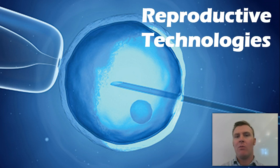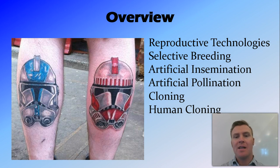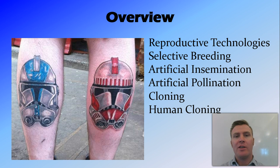Hi guys, in this video we're going to talk about some reproductive technologies. First we're going to work out what it is I'm talking about when I say reproductive technologies. Then look at a few different examples including selective breeding, artificial insemination, artificial pollination, cloning, and the dreaded human cloning.